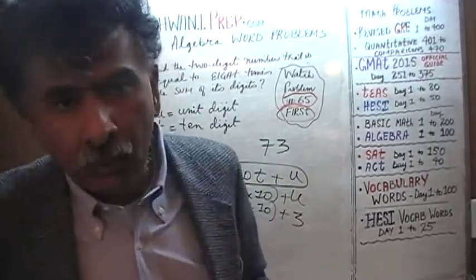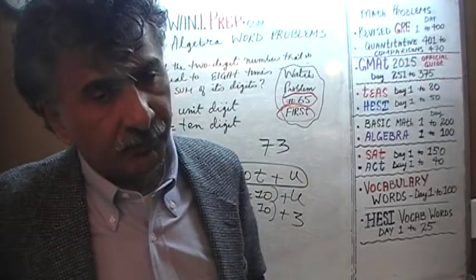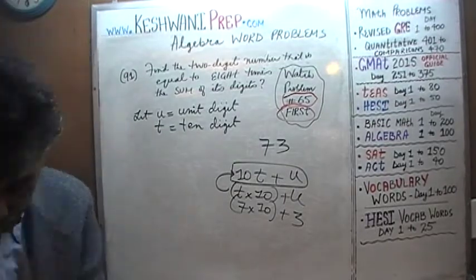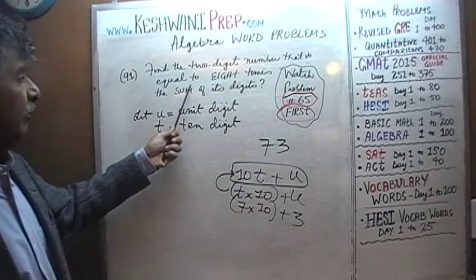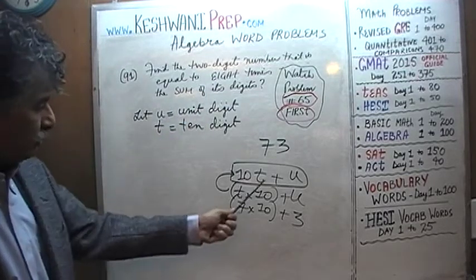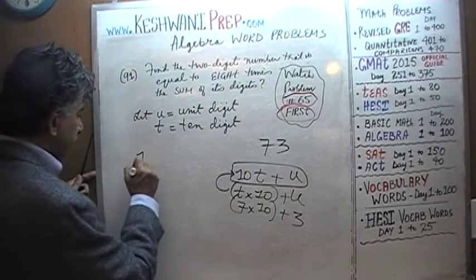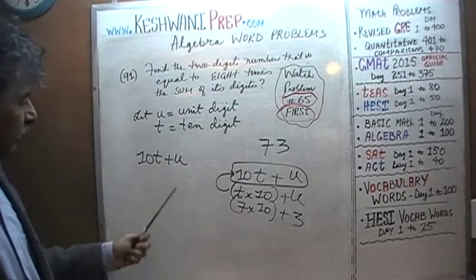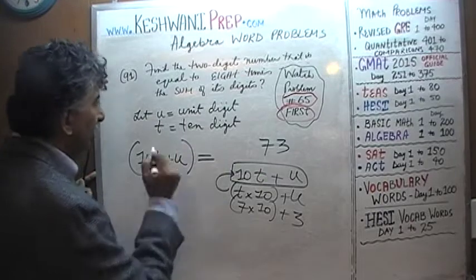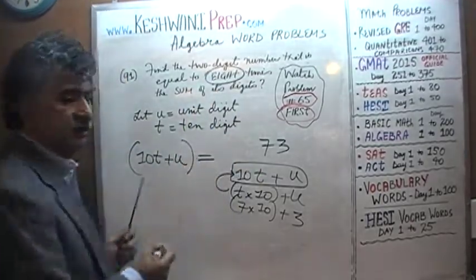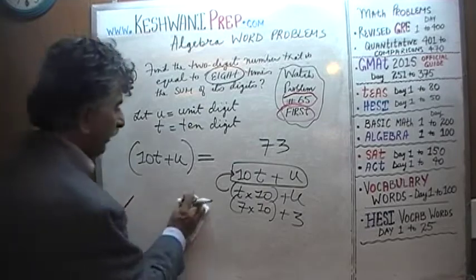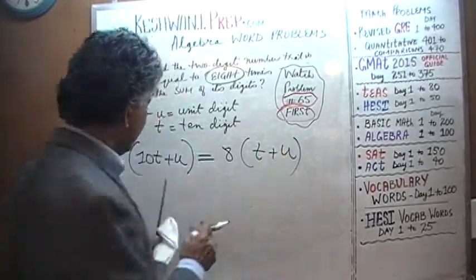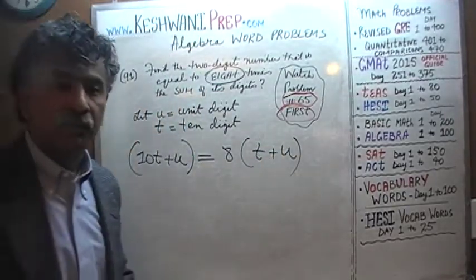In problem number 65 we also learned how to represent a three-digit number. Now let's begin our process. We are told we have a two-digit number equal to 8 times the sum of its digits. The two-digit number is 10T plus U, where T is the tens digit and U is the unit digit. This number has to equal 8 times the sum of the digits, which is 8 times the quantity T plus U.